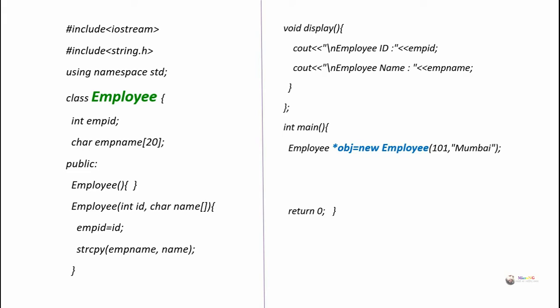One pointer object named obj gets created. The star symbol is used before the object pointer name. To call a method belonging to the employee class, we use the arrow operator with object pointer obj. So to call the display method, we write obj arrow display. Finally, to destroy the object pointer, we use delete obj, which destroys the pointer object obj. Pointer object named obj for the class employee is created using the new operator.